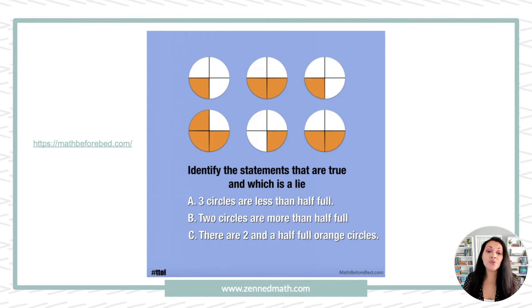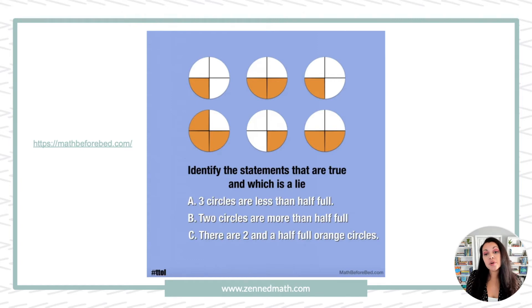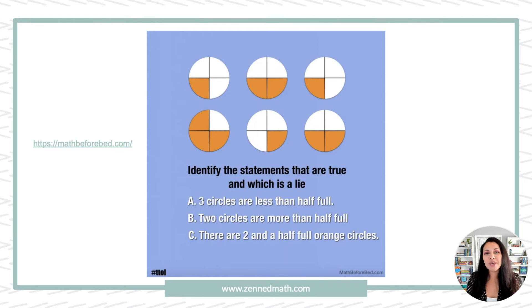Hopefully you found that B is the correct answer. It says 'two circles are more than half,' but if you look at the images, there's only one circle that's more than half. So B would be the lie.